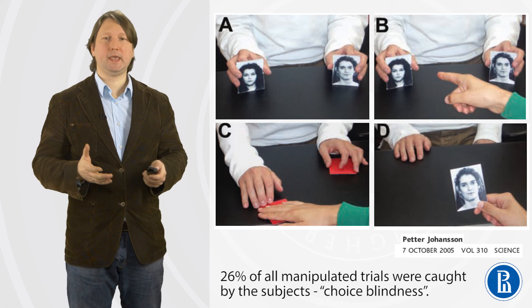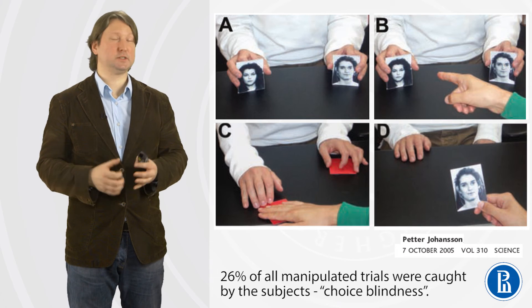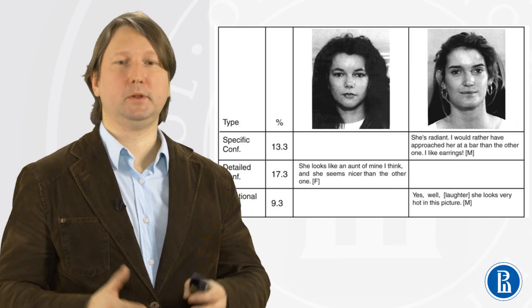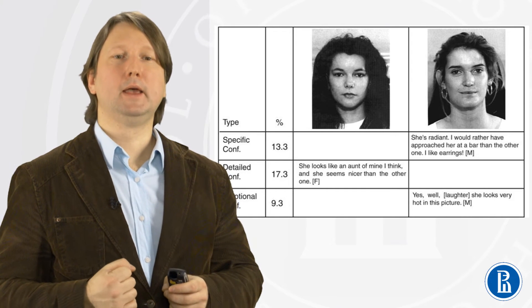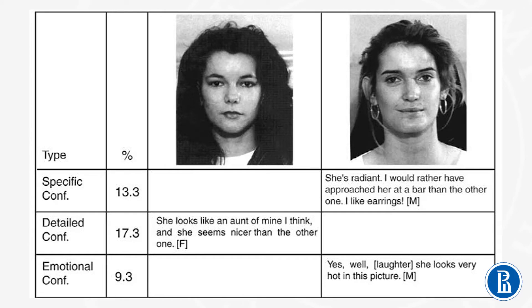What is interesting, people nicely explain their decisions, the decisions they never made. For example, here you can see some explanations. This girl looks like my aunt, or this girl looks very hot. People nicely explain decisions they never made, because the decisions were manipulated by the experimentator. It's a good illustration of choice blindness.